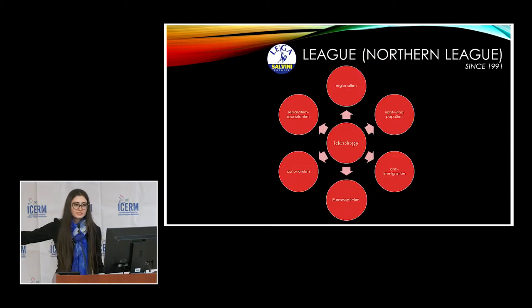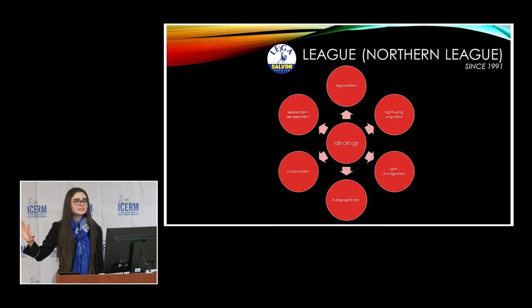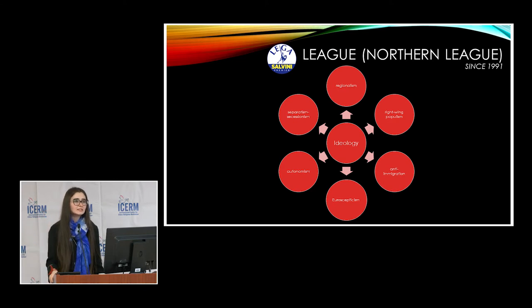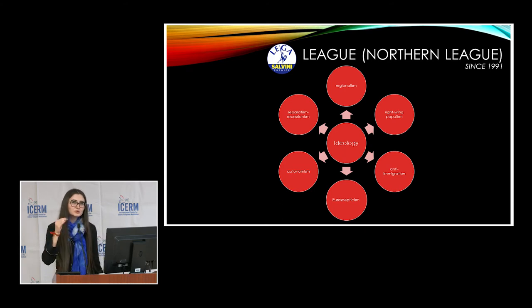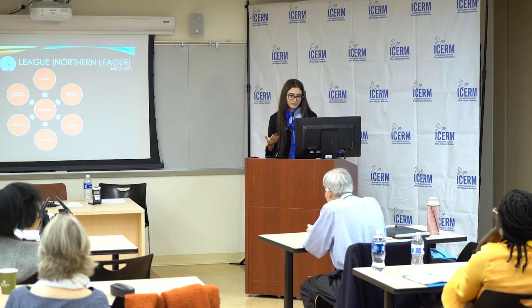The main separatist party in Italy is the League of the North, now simply called the League. Since 1991 they were the Northern League — the most separatist party in Italy, wanting to separate the North from the South and create a new country called Padania. But recently they changed their program toward an anti-immigration and Eurosceptic ideology in order to win elections.